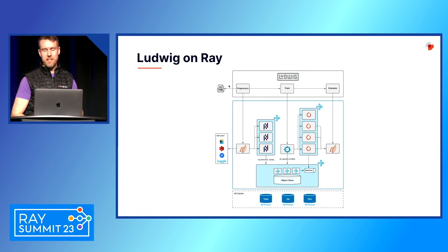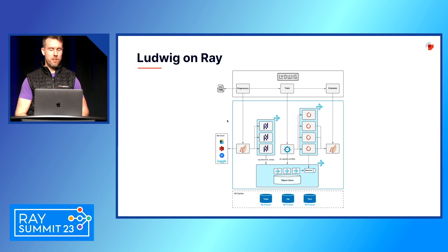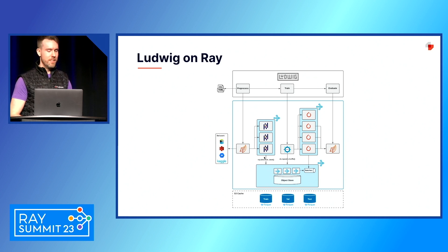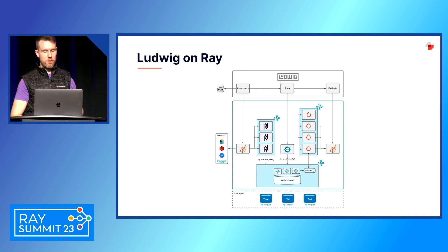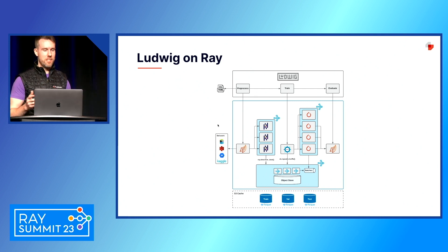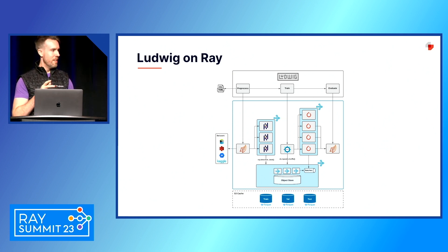The architecture for Ludwig on Ray is quite interesting. The different stages of the Ludwig pipeline — preprocessing, training, and model evaluation — all get submitted as distributed jobs to Ray. For example, Dask on Ray provides distributed pandas for processing very large datasets, using the Ray object store as a data broker between stages. We have a distributed training process across multiple workers and batch evaluation at the end. All of this is an abstraction built on top of Ray, so you don't have to think about the actual actors being used under the hood.